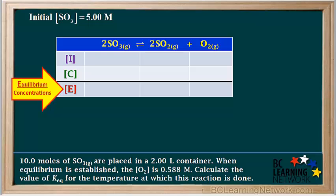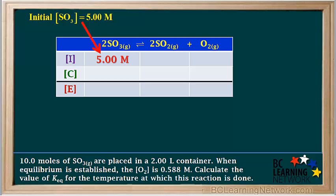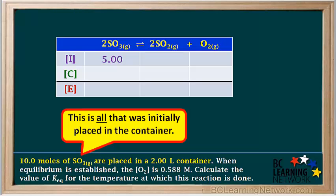It's really important to fully understand ICE tables, as they're used a lot in chemistry. In this cell, we write the initial concentration of SO3. We had calculated this near the beginning, and it was 5 molar. Since the square brackets mean we are dealing with molar concentrations, we can just drop the unit molarity in ICE tables. Some teachers require that you write the unit M after all concentrations in an ICE table, so make sure you follow your teacher's wishes.